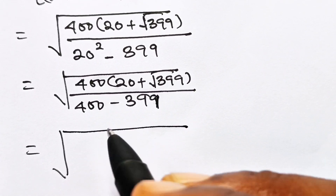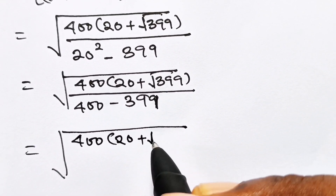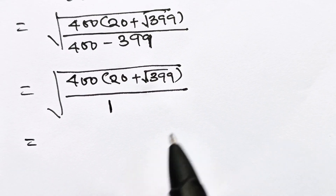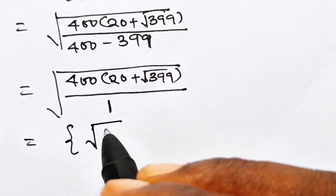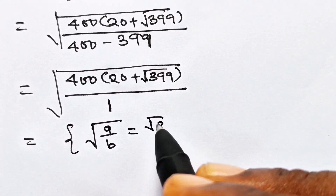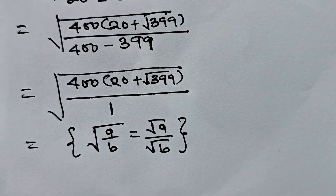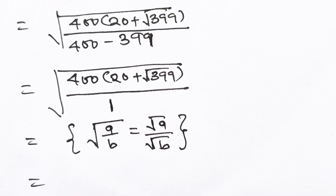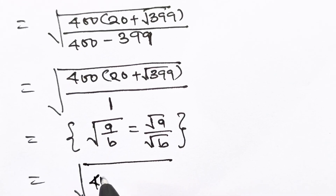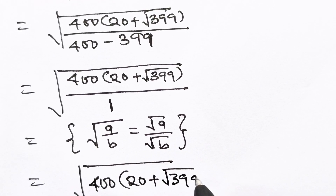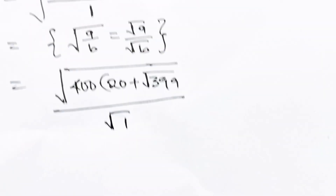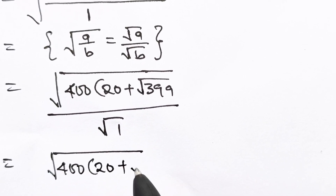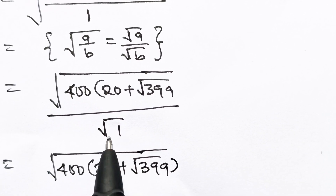This gives us the square root of 400, bracket 20 plus root 399, divided by 400 minus 399, which is 1. That means this is the same thing as — remember that square root of A divided by B is equal to square root of A divided by square root of B. So this equals square root of 400 bracket 20 plus root 399 divided by the square root of 1, which gives us square root of 400 bracket 20 plus root 399, because square root of 1 is 1.